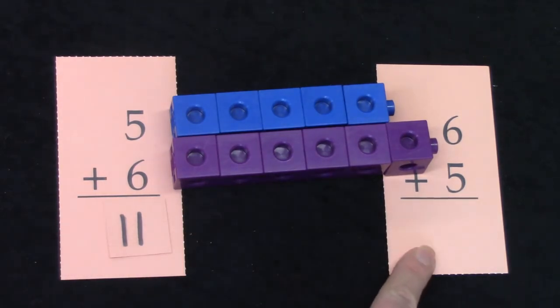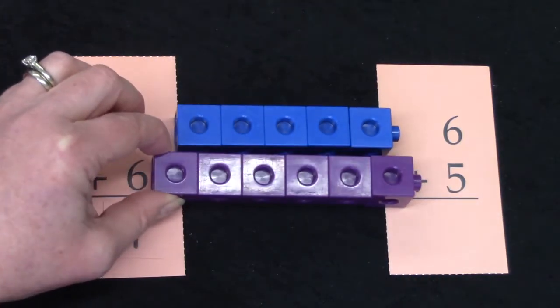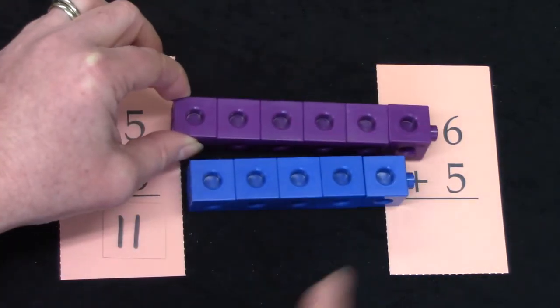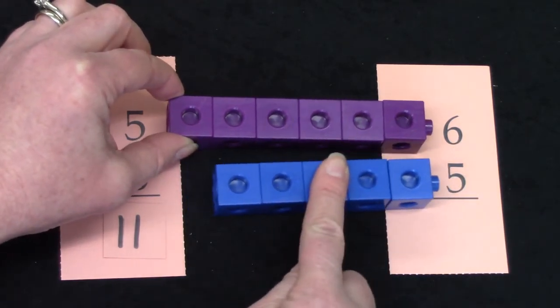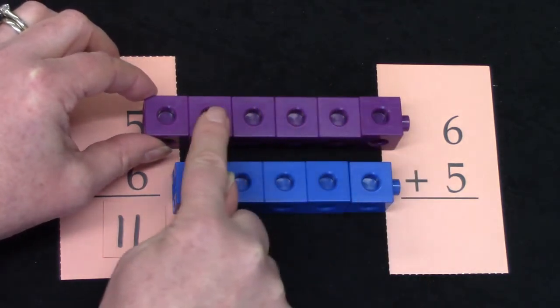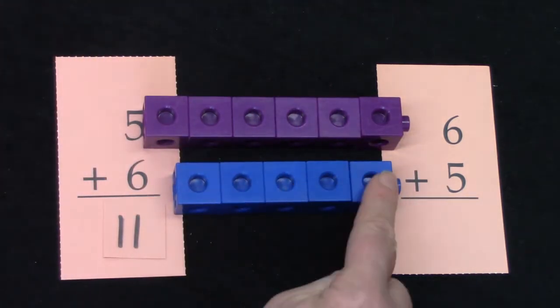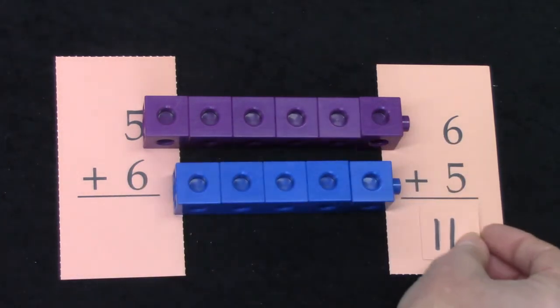What about this math fact? I would need to switcheroo my numbers and have the 6 near this number and the 5 near this one. I have 1, 2, 3, 4, 5, 6. 1, 2, 3, 4, 5. I didn't take any blocks away and I didn't add any, so I can just switcheroo my number over here. 6 plus 5 is 11.